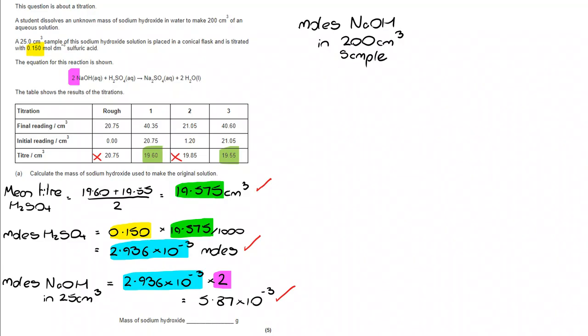Well, to do that, to get from 25 cm³ to 200, I'm simply going to take my value, 5.87 × 10⁻³, and multiply it by 8 because 25 goes into 200 eight times. That takes me to 0.4698 moles.